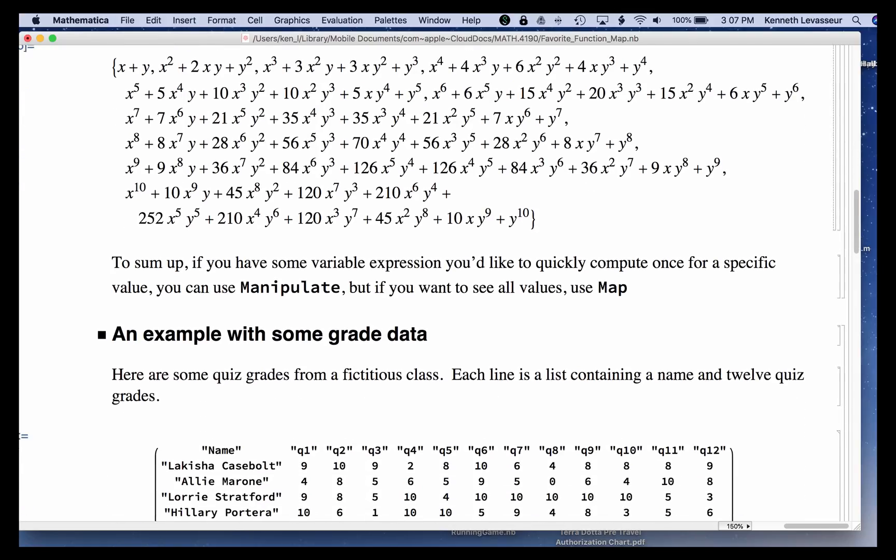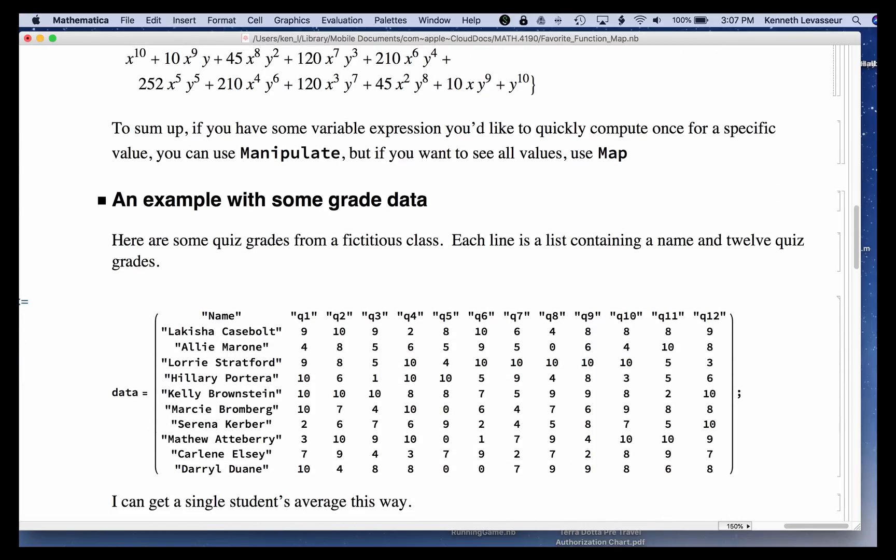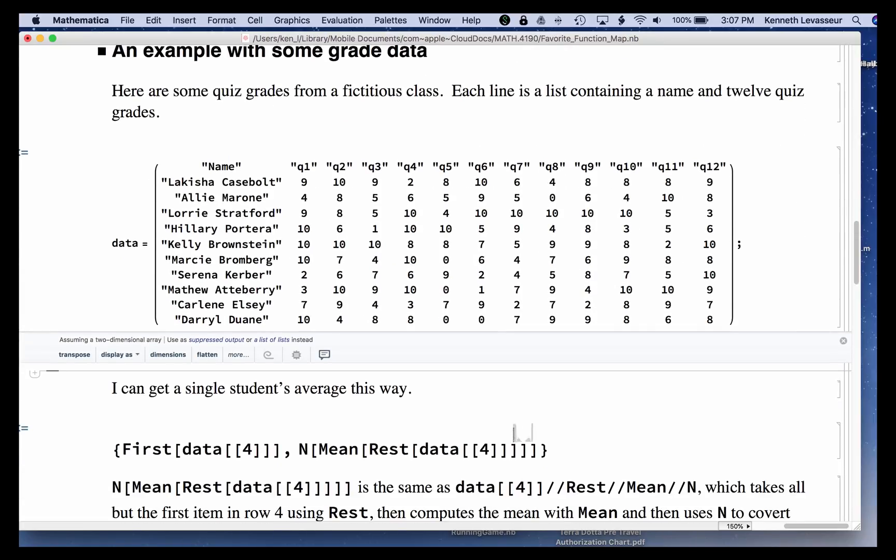Here's another example. I've got this fictitious course with 12 quiz grades for each of a number of students. And I'll evaluate that. And now, here's an expression that takes, I just took arbitrarily the fourth data item, which is Lori, and create a list with the first of the fourth, first item in the fourth list, which is the name. And then I take the fourth item in the list again. And Rest will drop the name, giving me just a list of numbers, of grades. Compute the mean.